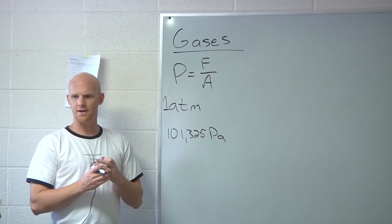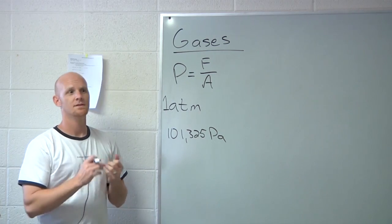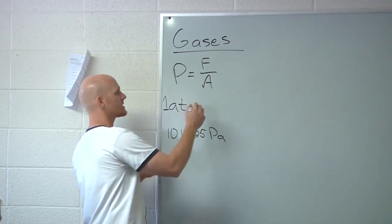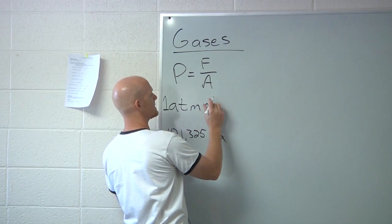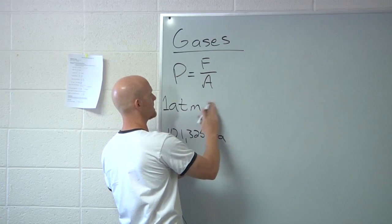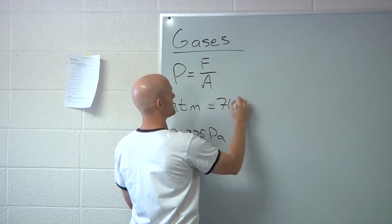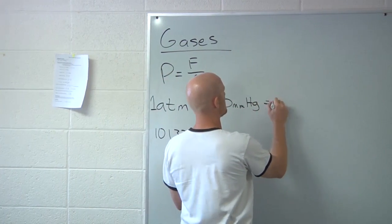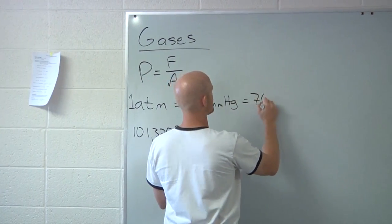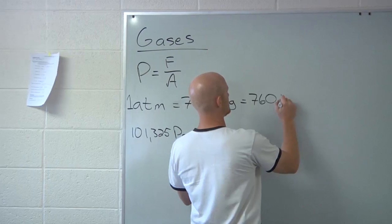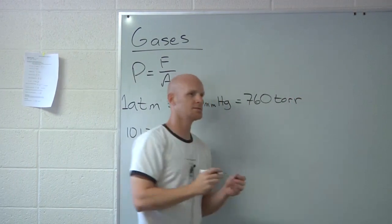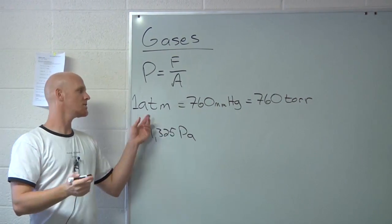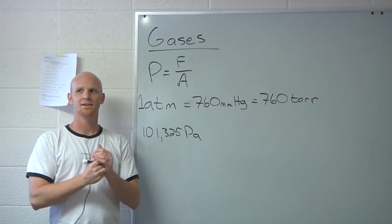What else might we see? You might see bar, you might see torr, you might see millimeters of mercury. There are 760 millimeters of mercury equivalent to one atmosphere — same thing, 760 torr. And one bar is almost the same as one atmosphere.